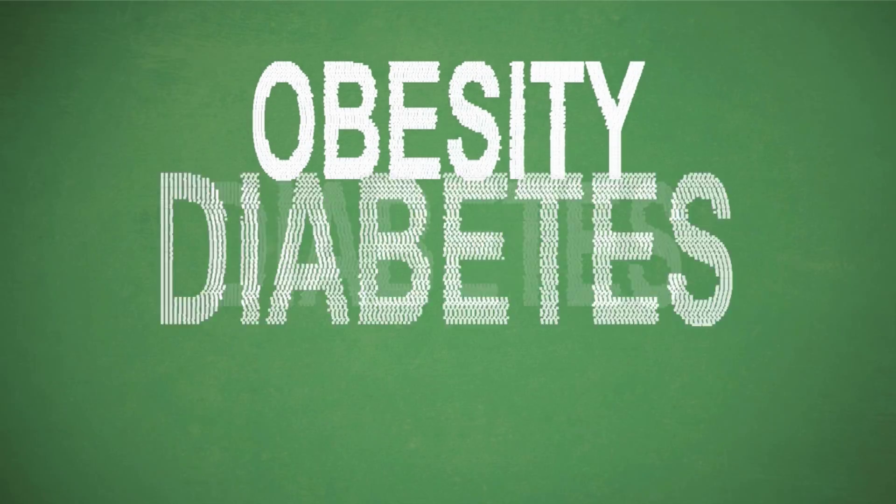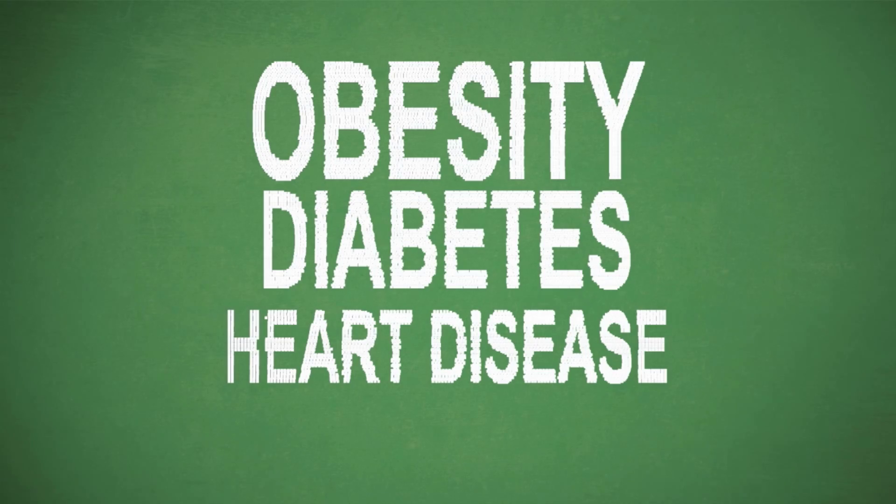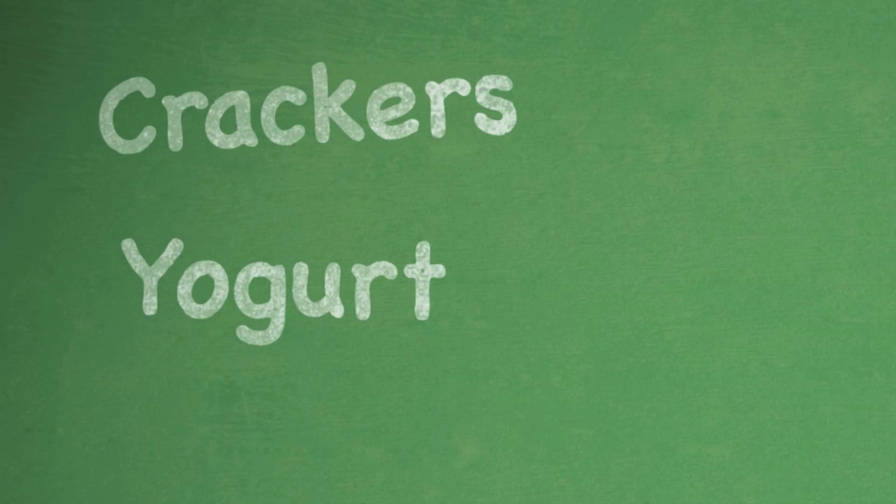Over time, too much sugar can lead to obesity, diabetes, and heart disease. Sweets aside, many added sugars lurk in foods you wouldn't think of, like crackers, yogurt, and tomato sauce.